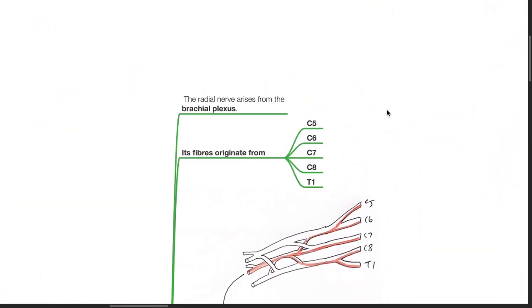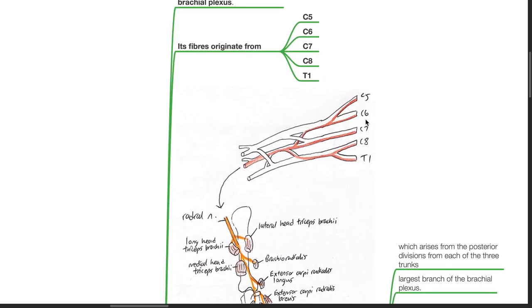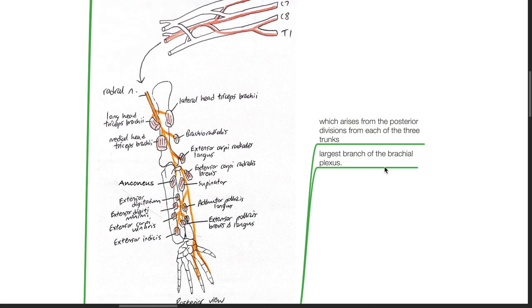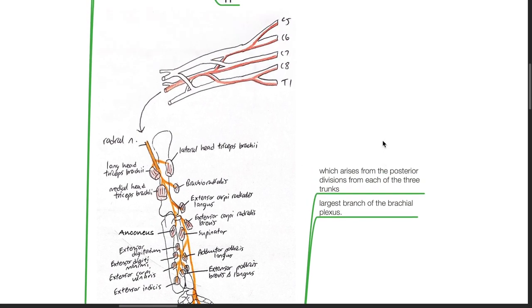The radial nerve arises from the brachial plexus and its fibers originate from C5, C6, C7, C8 and T1. It arises from the posterior cord which arises from the posterior divisions from each of the three trunks. It is the largest branch of the brachial plexus.